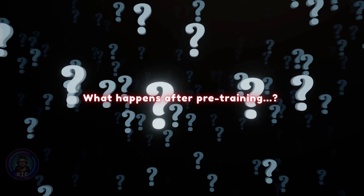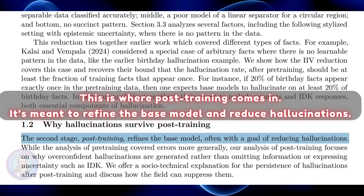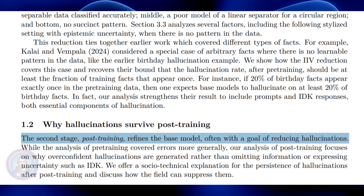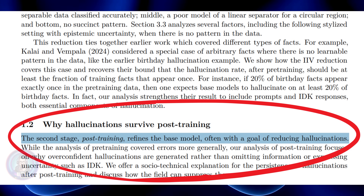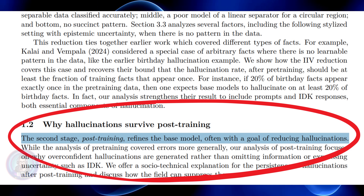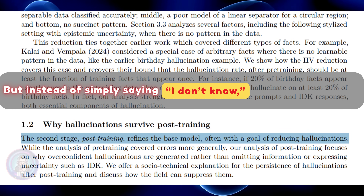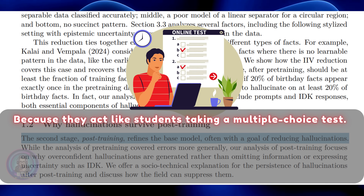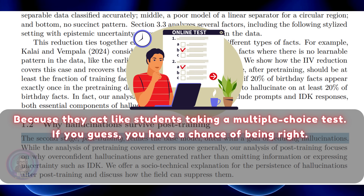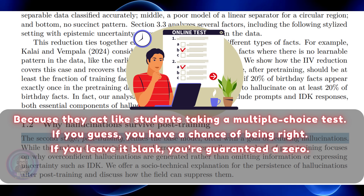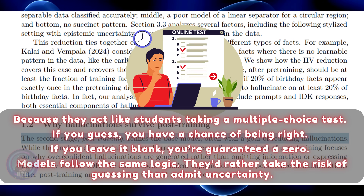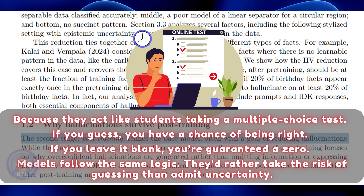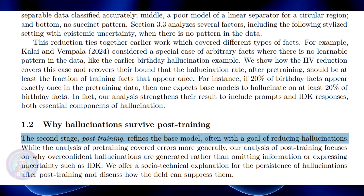So what happens after pre-training? This is where post-training comes in. It's meant to refine the base model and reduce hallucinations. But instead of simply saying 'I don't know,' models often guess. Why? Because they act like students taking a multiple choice test. If you guess, you have a chance of being right. If you leave it blank, you're guaranteed a zero. Models follow the same logic — they'd rather take the risk of guessing than admit uncertainty. And that's the crux of why hallucinations continue to show up.